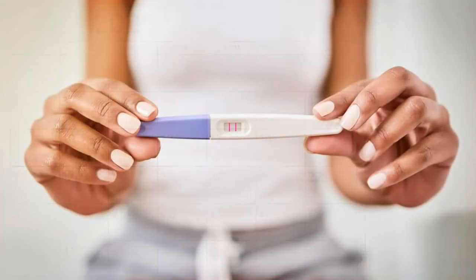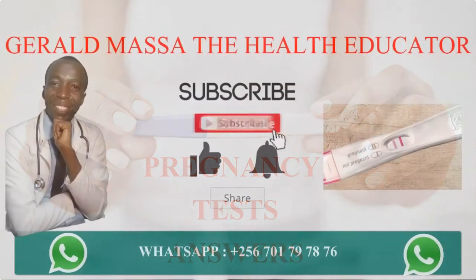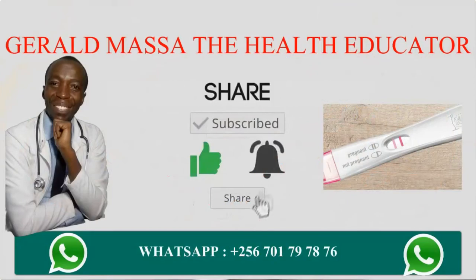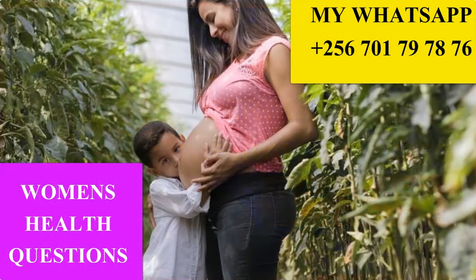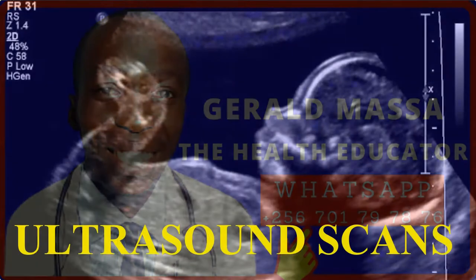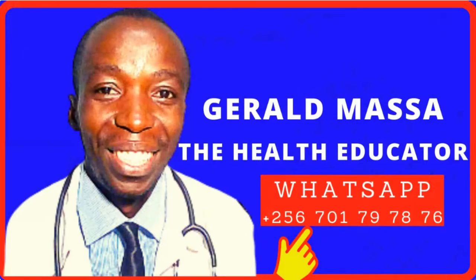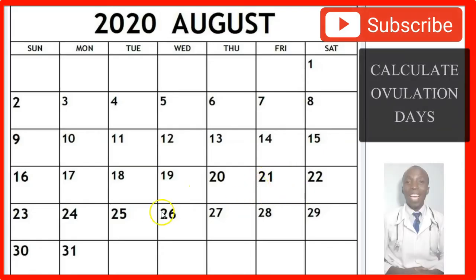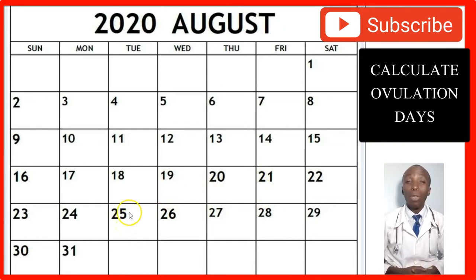How to calculate your ovulation days when your cycle is a 25-day cycle? If your cycle is 25 days, how can you tell the days you are most likely to be ovulating? We shall take an example of this month.